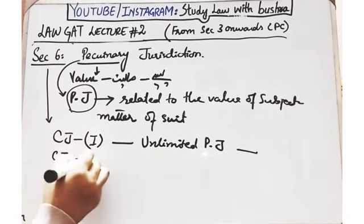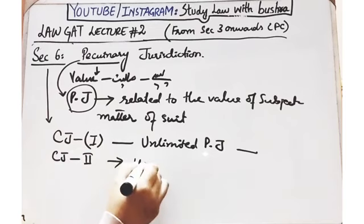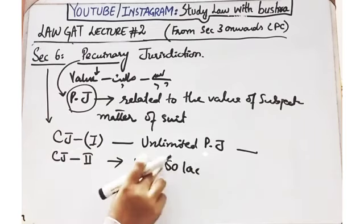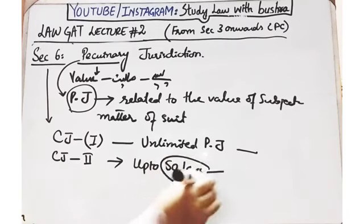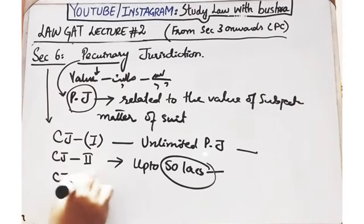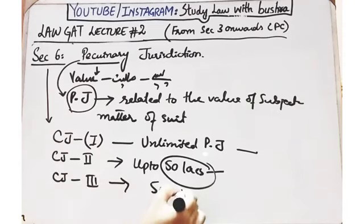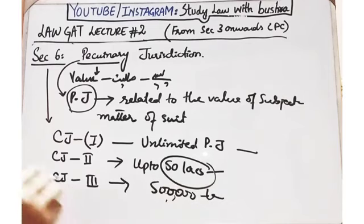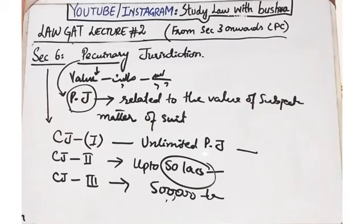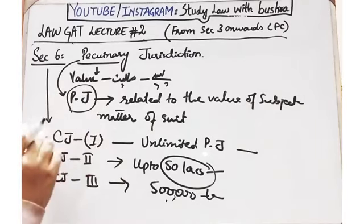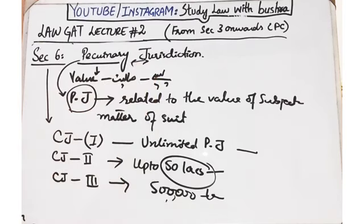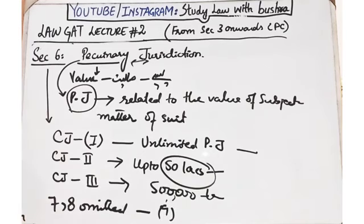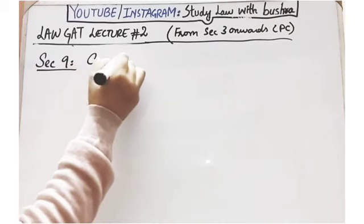तमाम courts को बाक़ाइदा pecuniary jurisdiction दी गई है। Civil Judge 1 के पास unlimited pecuniary jurisdiction है — वो किसी भी मालियत का मुकदमा सुन सकता है। Civil Judge 2 up to 50 lakh तक के مقدمے سن سکتا ہے، اور Civil Judge 3 کے پاس 5,000,000 تک کے مقدمے سننے کی power ہے۔ Section 7 اور Section 8 omitted ہیں۔